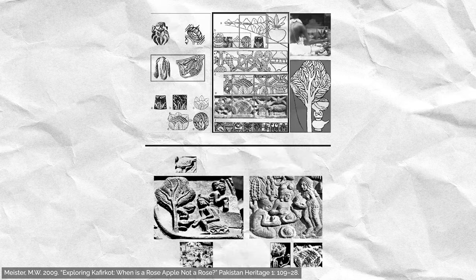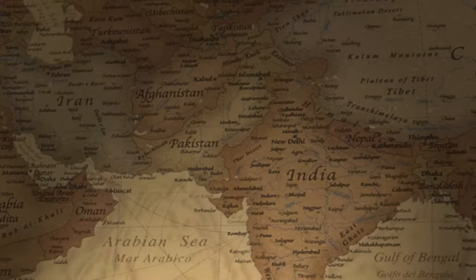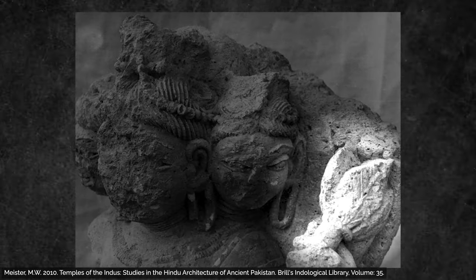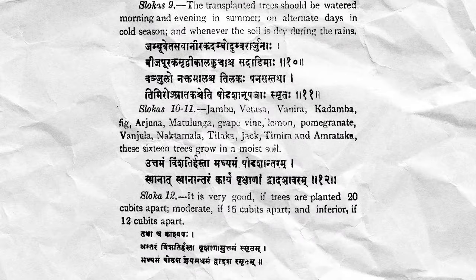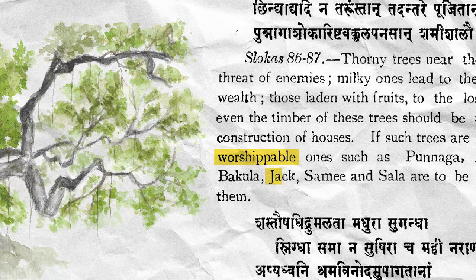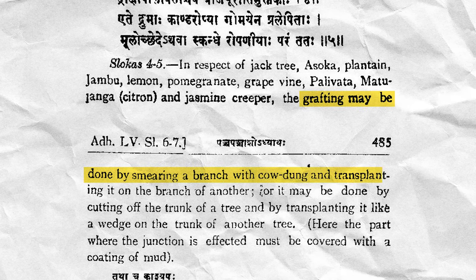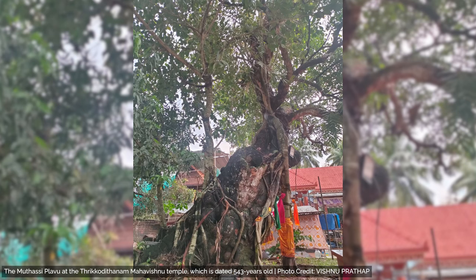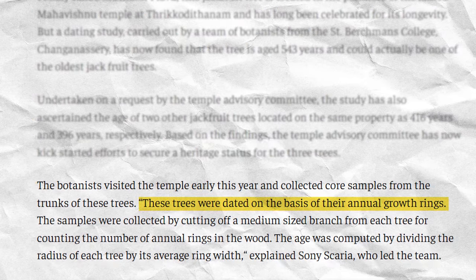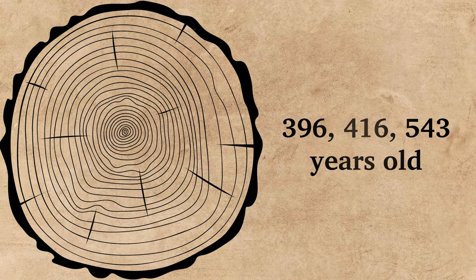These interpretations have led some scholars to think about jackfruit representations elsewhere in South Asia. For example, at the archaeological site of Kafir Khot in modern-day Pakistan, a yogic-looking sculpture was unearthed. The leaves on the sceptre have been interpreted as coming from the jackfruit. The sacred significance of jackfruit seems to continue over time. In the Burhat Samhita, a 6th century CE encyclopedic-like text, the jackfruit is also mentioned — it's part of a list of worshipable trees, with detailed instructions on how to grasp and maintain the tree. And the sacredness of jackfruit is still present today: in Kerala, just outside of the city of Kottiyam, there are three sacred jackfruit trees at the Mahavishnu temple, recently dated using dendrochronology and found to be 396, 416, and 543 years old.